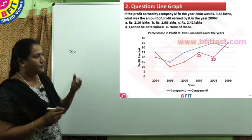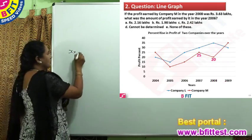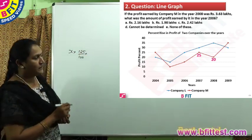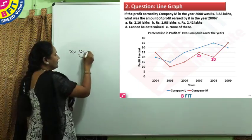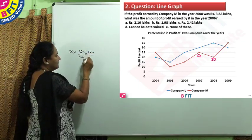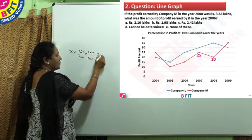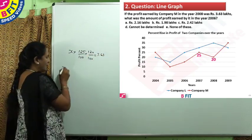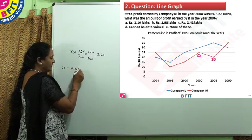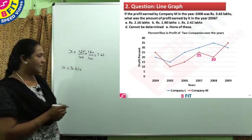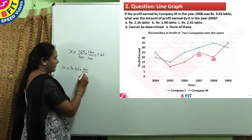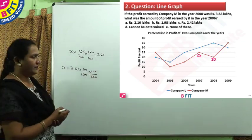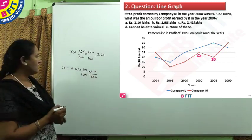There is a 25% increase for 2007. Increase means we add it with 100, so that gives us 125/100. And in 2008 it is a 20% increase, so we add 100 to 20, giving 120/100. So this equals 3.63. To find the initial value X, taking all these factors reciprocal to the other side: X = 3.63 × (100/125) × (100/120), which gives the profit in 2006.